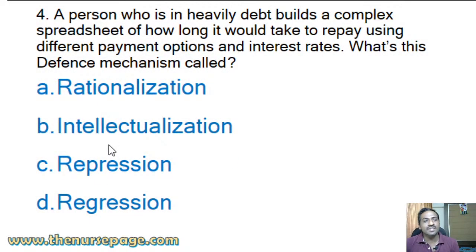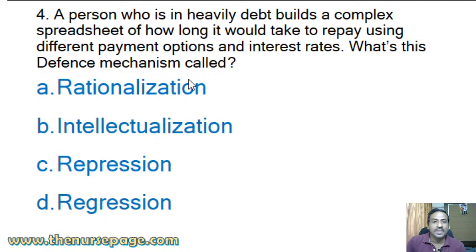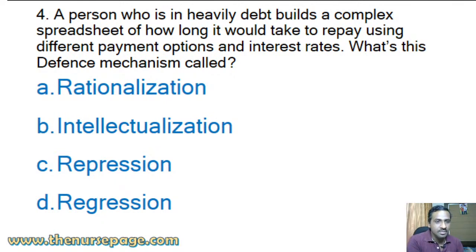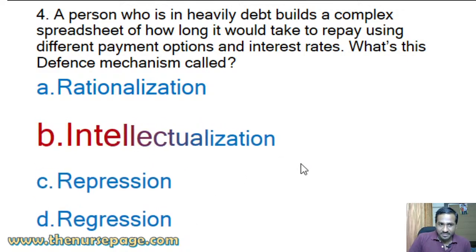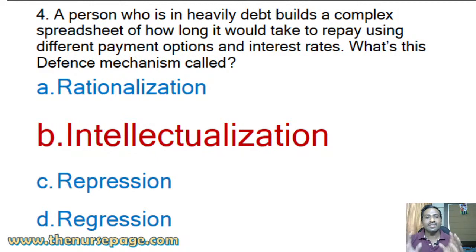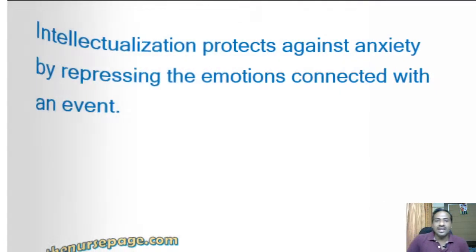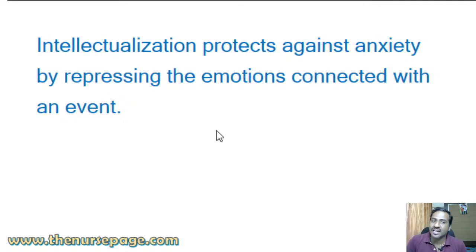Fourth practice question: 'A person who is in heavy debt builds a complex spreadsheet of how long it would take to repay using different payment options and interest rates. What defense mechanism is this?' Options: rationalization, intellectualization, repression, regression. The answer is intellectualization. The person made an intellectual plan to get out of the stressful debt situation — logically charting payments and interest rates to reduce anxiety. Intellectualization protects against anxiety by repressing the emotions connected with an event.